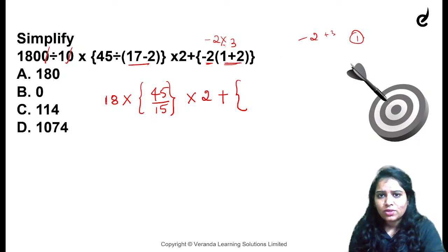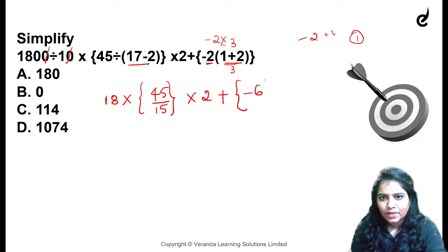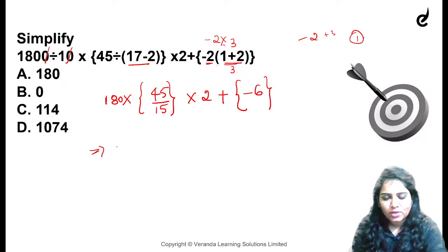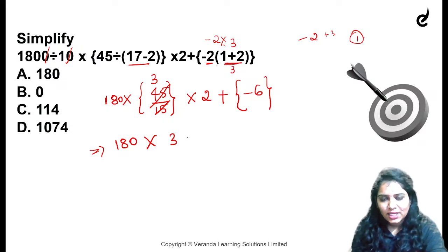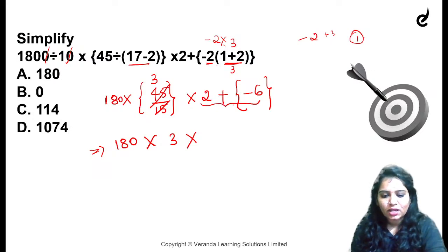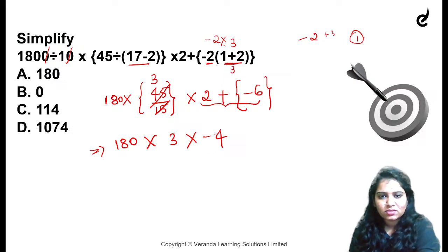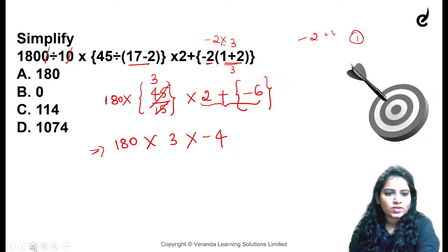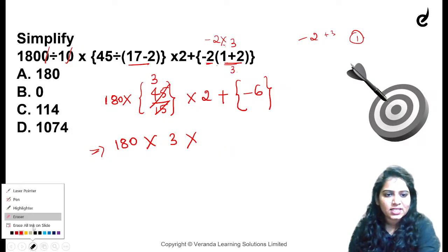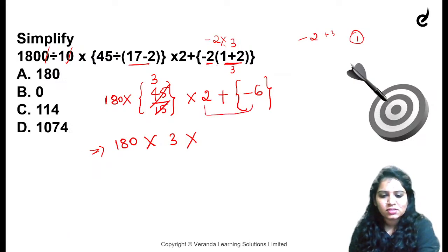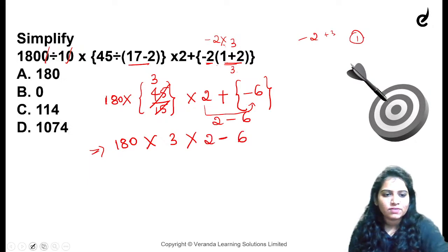Here, into 2, this is complete 3, so this is minus 6. Correct, minus 6. Next step is 180 into 15, 15, 15 — so 3 into this is complete 2 minus 6. So 2 minus 6 is minus 4.